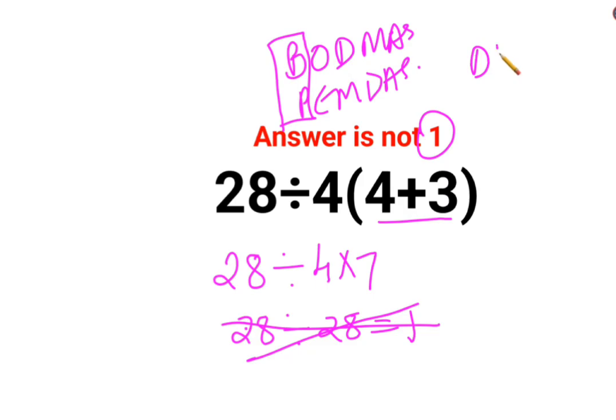Now the reason for that is division and multiplication always hold equal precedence. So in sums like these, you need to go from left to right. Whatever operation happens first from your left hand side has to be done first.